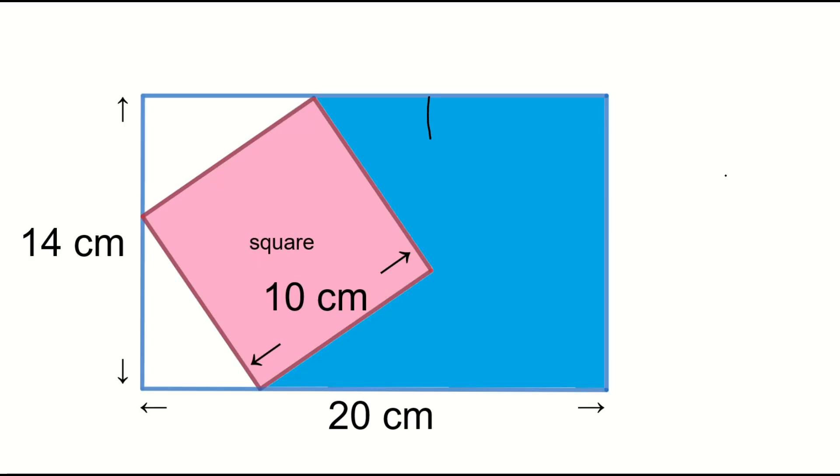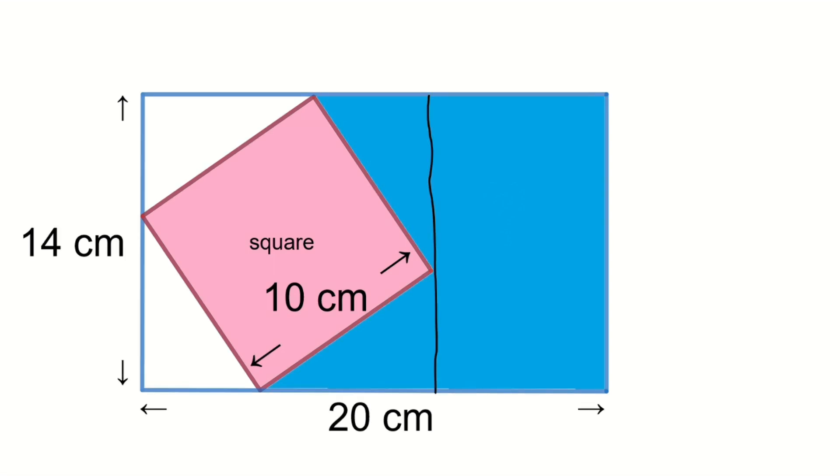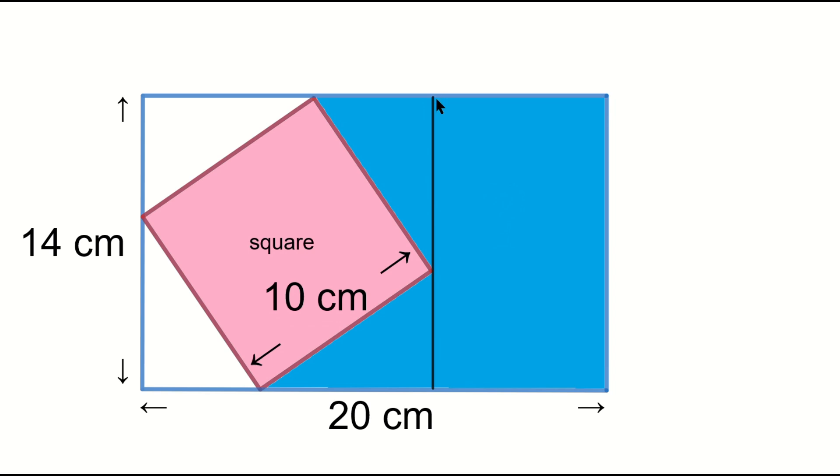At first, draw a line like this to divide the rectangle into two shapes. The shape on the right is a rectangle. Then, what is the shape on the left? That's right. It's a square.